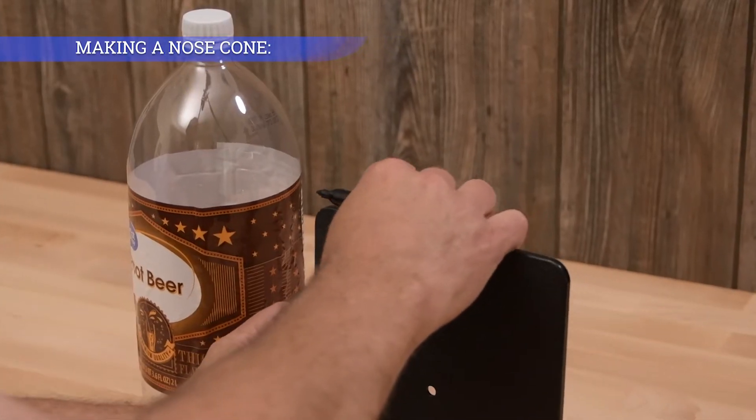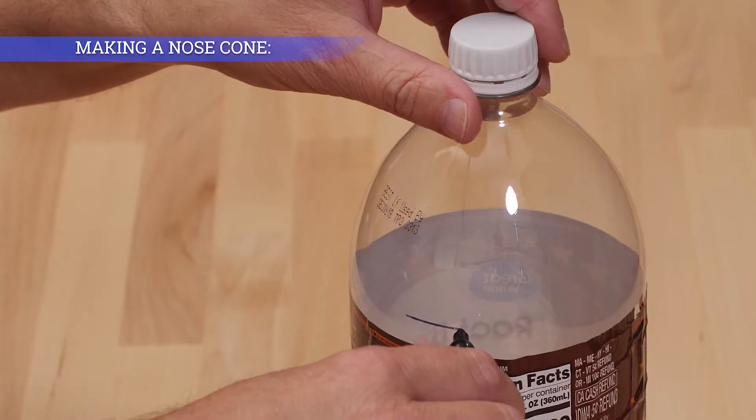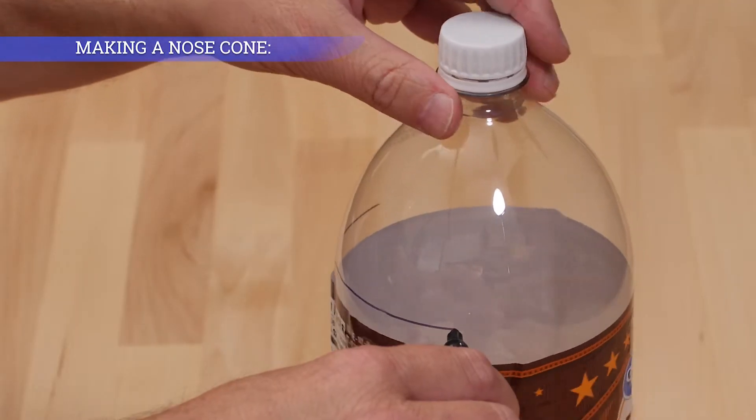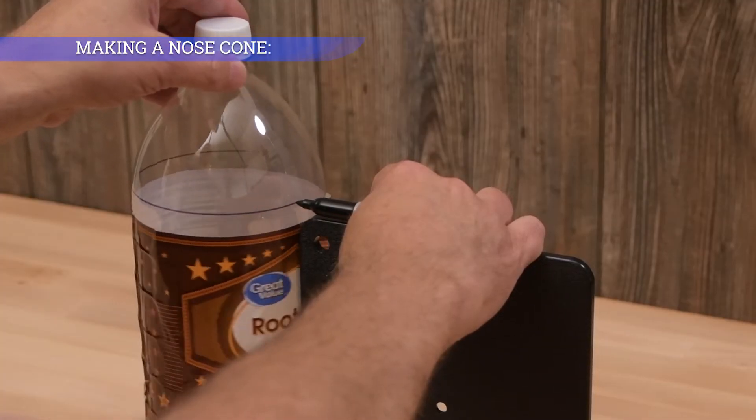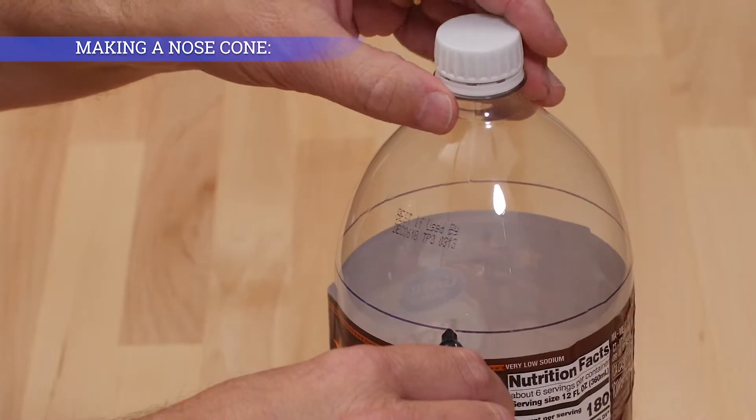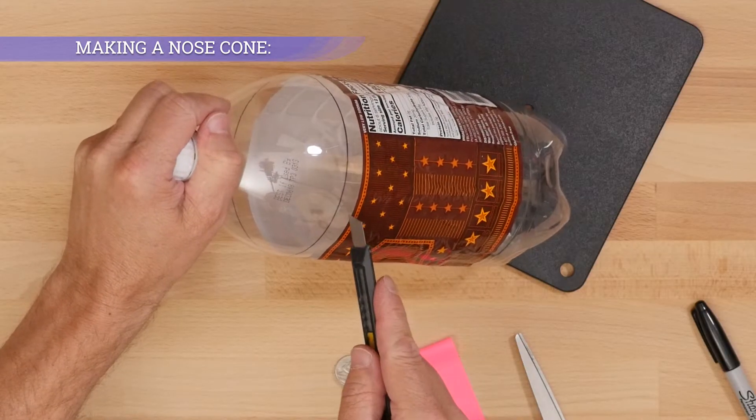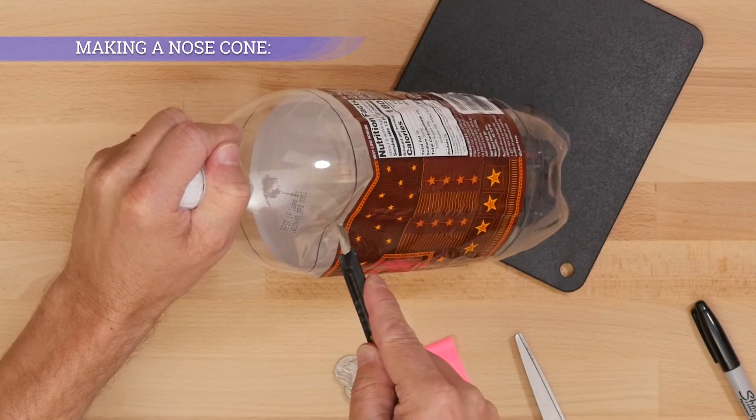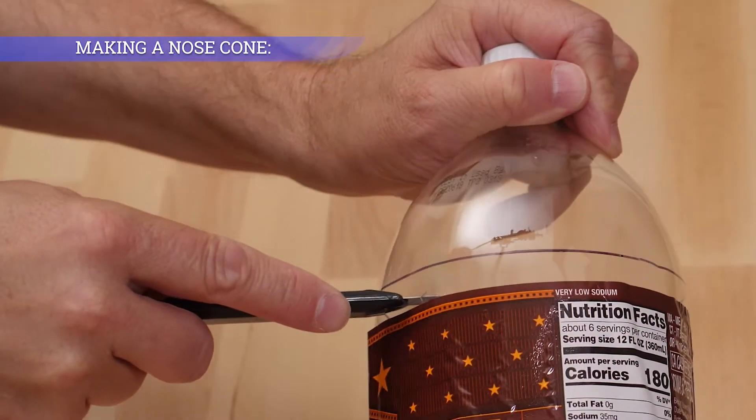Draw a line around the bottle using the base as a guide. Puncture the bottle below the line with a knife or box cutter.